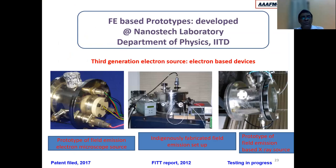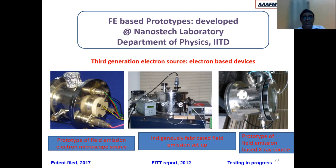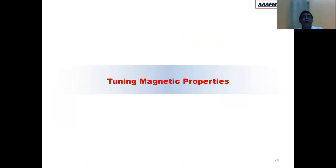We have also made a few prototype devices with this nanoparticle. One is a prototype field emission electron microscope source — a very small-sized general electron microscope source that can be mounted with any microscope to provide very high intensity. We have also indigenously developed a field emission measurement setup, which is much cheaper than commercially available systems. Additionally, we have made a prototype field emission-based accessory, which is still under testing.